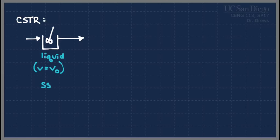One parameter we've really never had to use before that gets used more often for a CSTR is space time, or residence time, which is tau. We had briefly introduced this as just one of those other parameters I can give you to try to specify the size of a reactor.